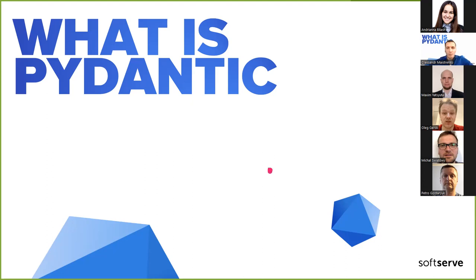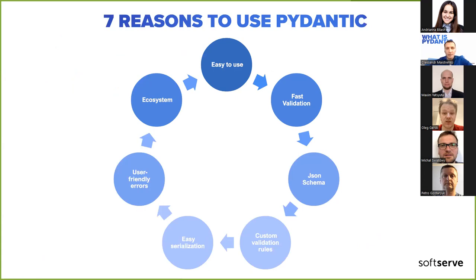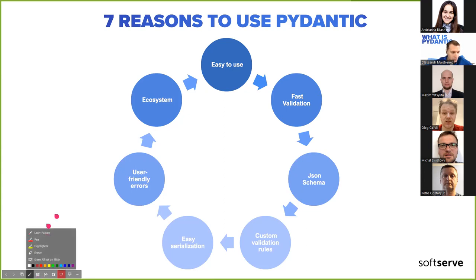Key features of Pydantic: it is easy to use — simple, intuitive, requires minimal boilerplate and configuration. It works fine with different IDEs like PyCharm, Visual Studio, mypy, and helps you correctly lint and highlight your code. It is also fast in validation because Pydantic's validation is written in Rust, making it one of the fastest Python validation libraries.